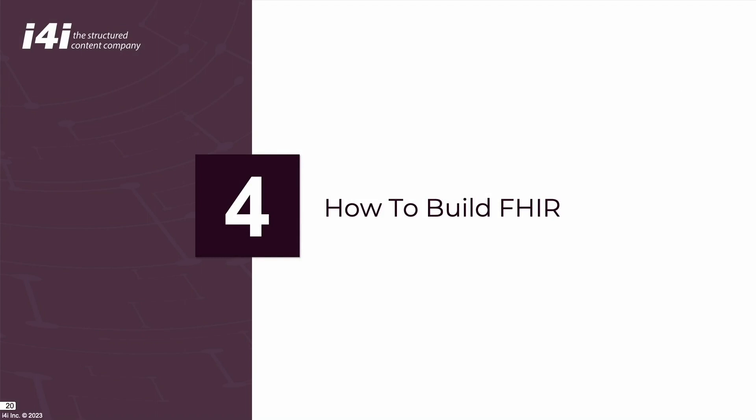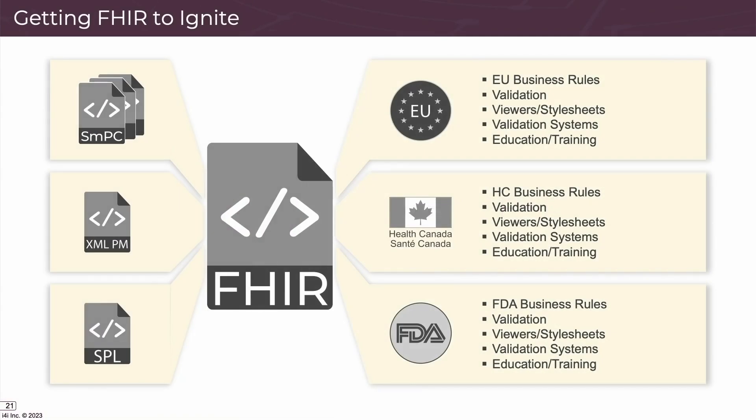We've talked about the theoretical aspects of FHIR — the what and the why — but now we turn to the how. How do we get FHIR implemented? First, the support and backing of health authorities on a global scale is needed. In order for FHIR to truly live up to its mandate, it must be the format in use at all major health authorities. It looks like FHIR has the support of the EMA in Europe, Health Canada, the US FDA, and many other jurisdictions as well.